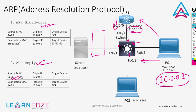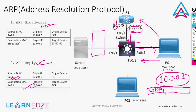That ARP reply will reach PC1. Now the frame of the data is complete — PC1 has its source IP address, source MAC address, destination IP address, destination MAC address, and the data it is going to send. So now PC1 can easily communicate with router R1 through the switch.